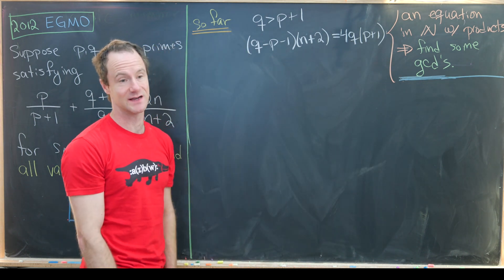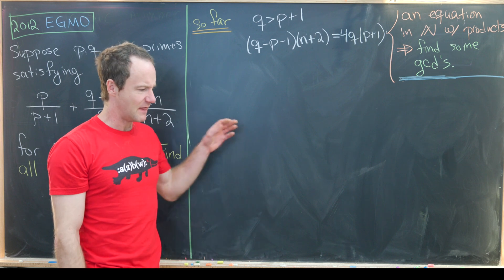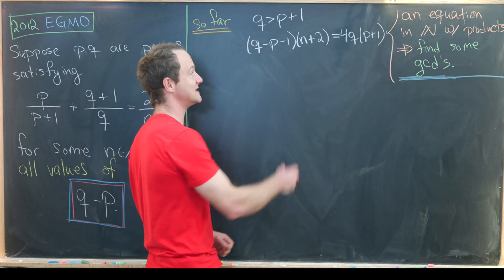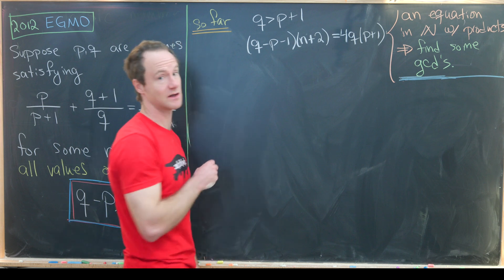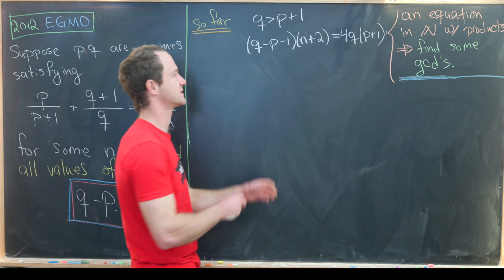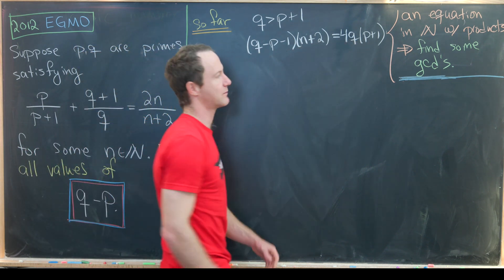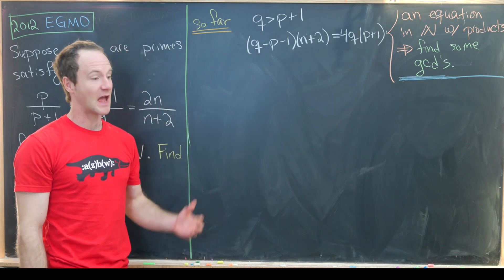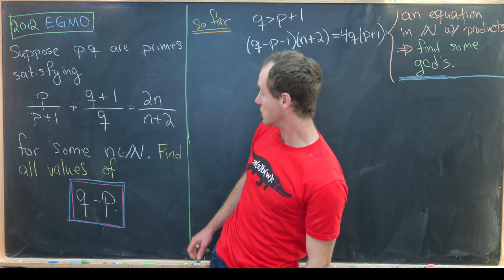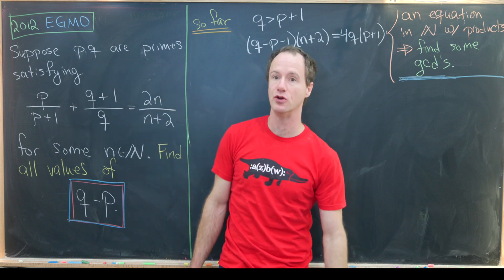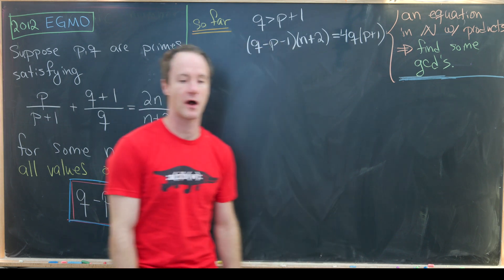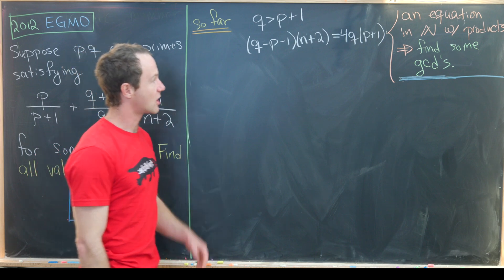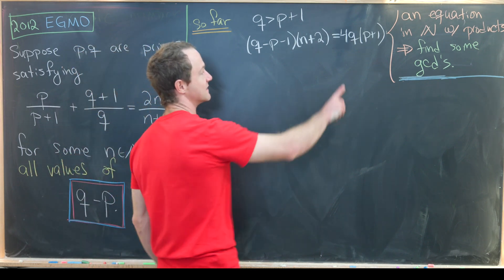Before moving on, let's rewrite our equation as an equation of integers by cross-multiplying: (q − p − 1)(n + 2) = 4q(p + 1). We now have an equation over the natural numbers with products on both sides — a big hint that we probably want to find some GCDs of the component parts, using the fact that p and q are primes.